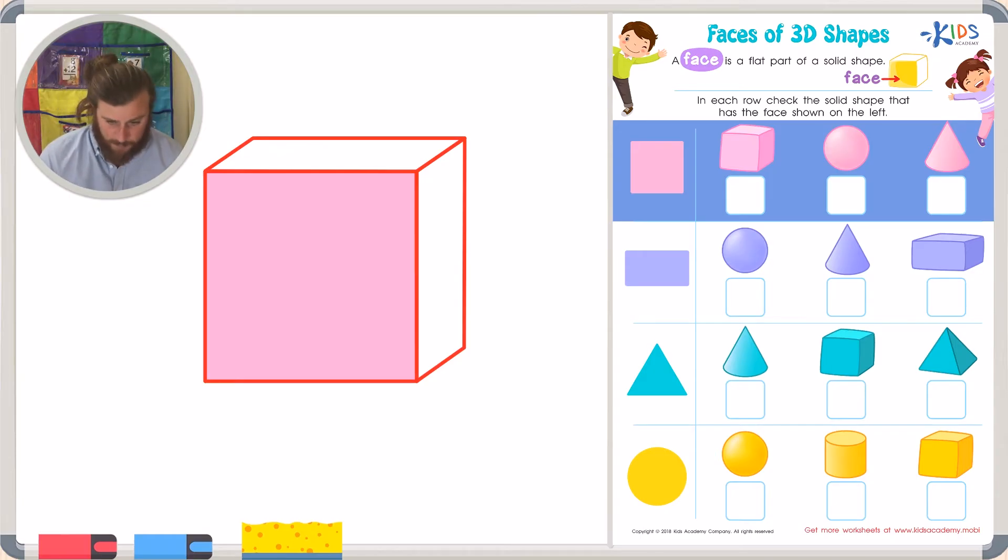This sphere has no faces, so this can't be correct. And finally, our cone has no square faces - it has a circular face on the bottom, but it doesn't have a square face. So the correct answer is our cube, because the cube has a square face.